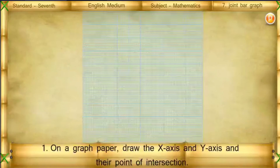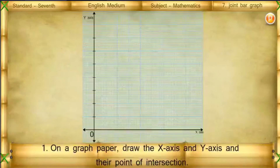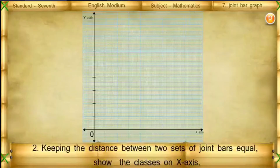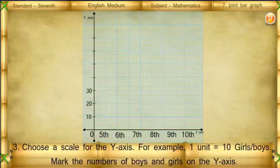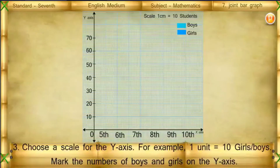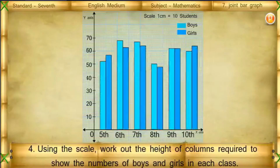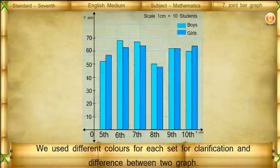Steps for drawing a joint bar graph: 1. On graph paper, draw the x-axis and y-axis and their point of intersection. 2. Keeping the distance between two sets of joint bars equal, show the classes on the x-axis. 3. Choose a scale for the y-axis — for example, one unit equals 10 girls or boys — and mark the numbers on the y-axis. 4. Using the scale, work out the height of columns required to show the numbers of boys and girls in each class. Use different colors for each set for clarification.